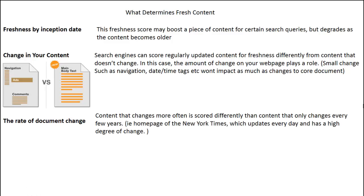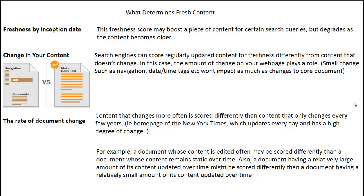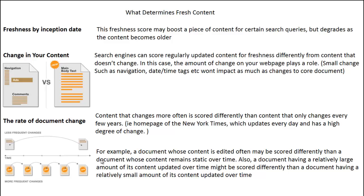The rate of document change also matters. Content that changes more often is scored differently than content that only changes every few years. For example, the homepage of the New York Times updates every day with a high degree of change. A document whose content is edited often may be scored differently than one whose content remains static. Additionally, a document with relatively large amounts of content updated over time might be scored differently than one with only small amounts updated. Documents that get updated more frequently are scored differently from those that don't — these are all freshness factors that affect your documents.